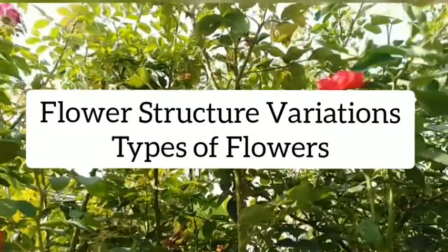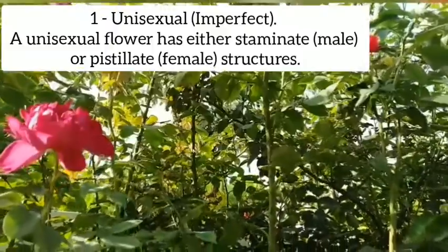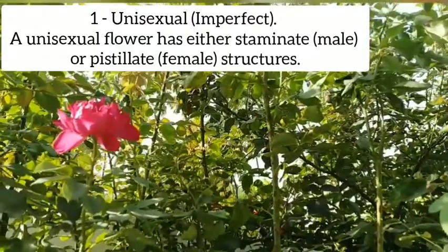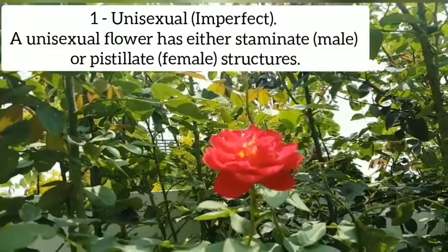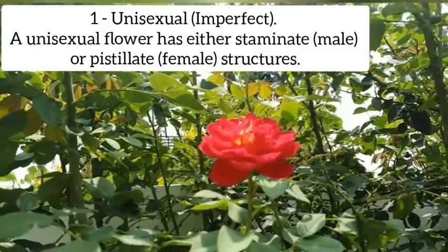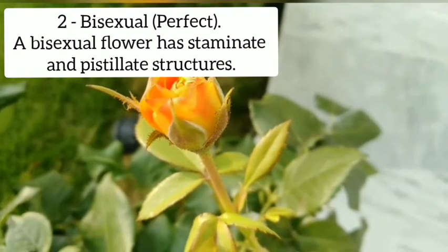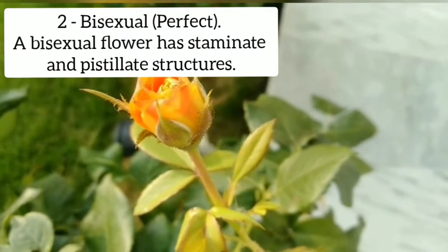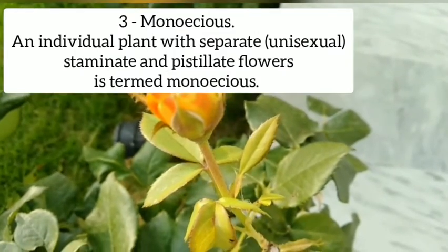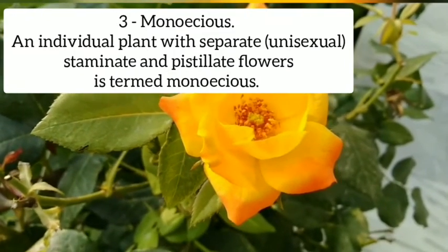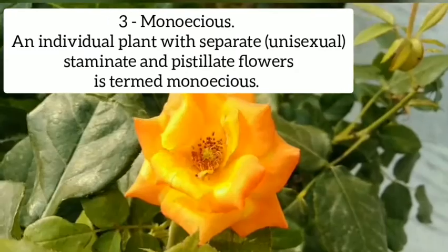Flower structure variations or types of flowers. First, unisexual (imperfect): a unisexual flower has either staminate or pistillate structures. Second, bisexual (perfect): a bisexual flower has both staminate and pistillate structures.